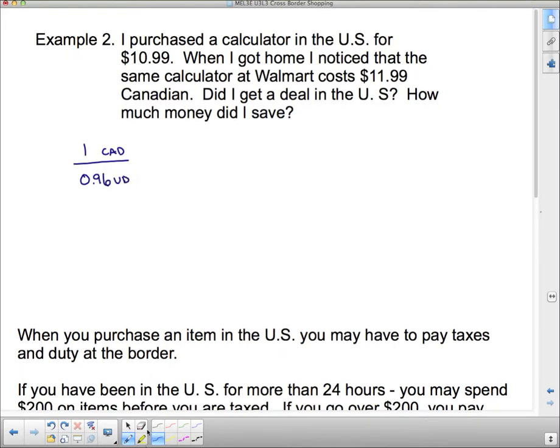So, we've got the conversion rate of one Canadian dollar is worth 96 cents in the United States, US dollars. And so, what is this $10.99? I purchased a calculator in the US for $10.99. So, that's a US dollar. So, I'm going to go $10.99. And I have to figure out what it is in Canadian and see if it's anywhere near that $11.99. So, cross multiplying, I get 0.96 times X equals 1 times 10.99. So, I'm going to divide by 0.96.